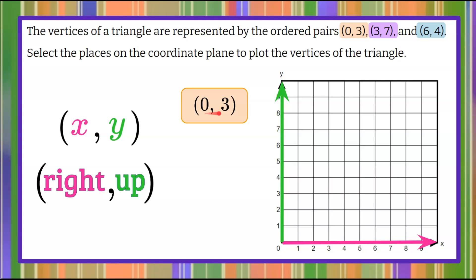Our first ordered pair is (0, 3). So that tells us to go 0 units to the right. So I'm going to start at the origin, and I'm not moving to the right at all because the value is 0. Since our second value is 3, I'm going to travel up 3 units from the origin because it was 0 to the right, and then 1, 2, 3 up, and plot my point.